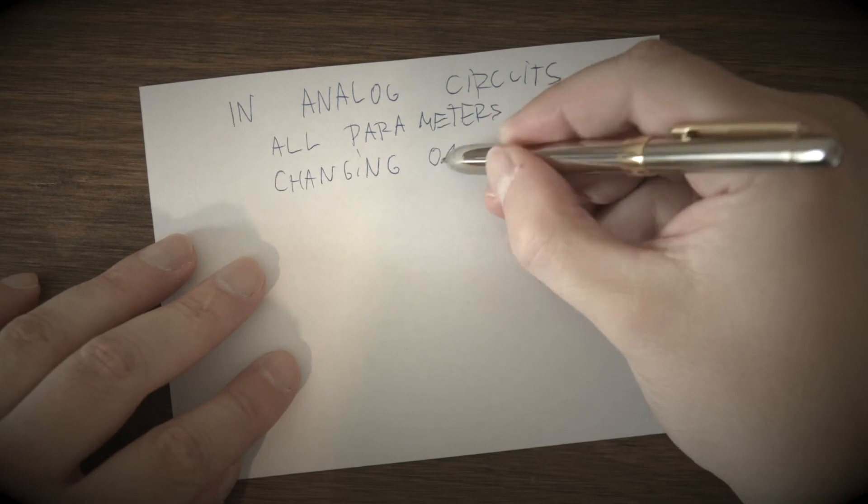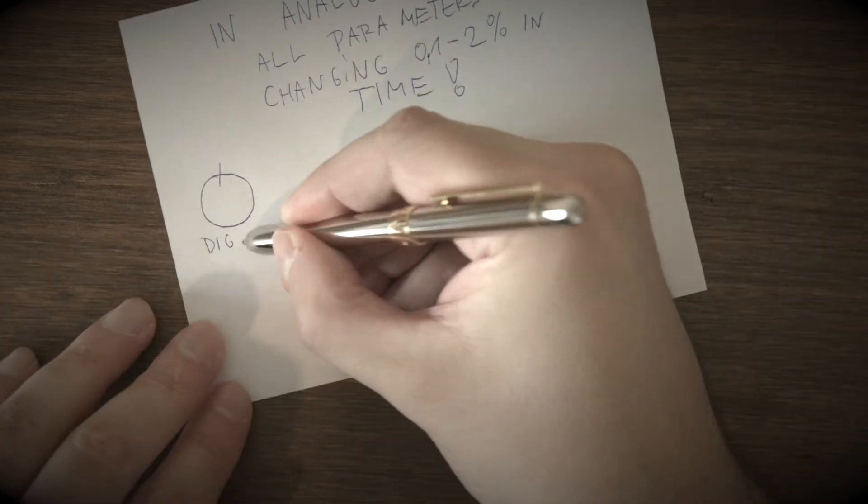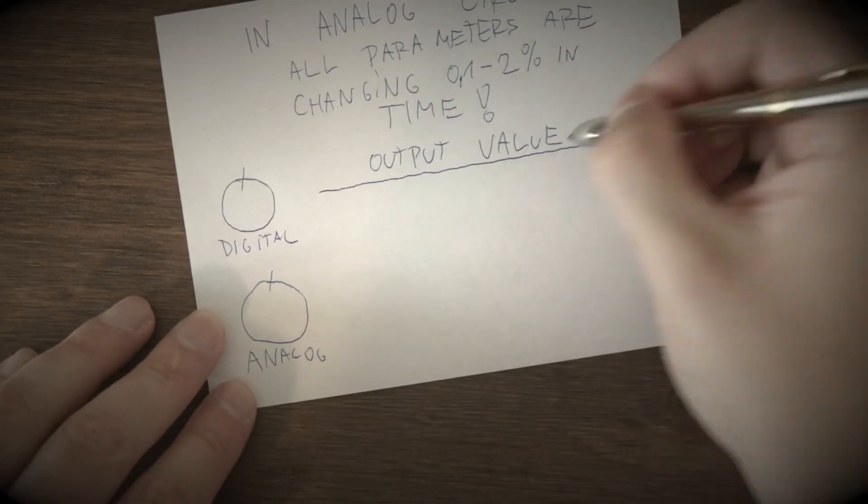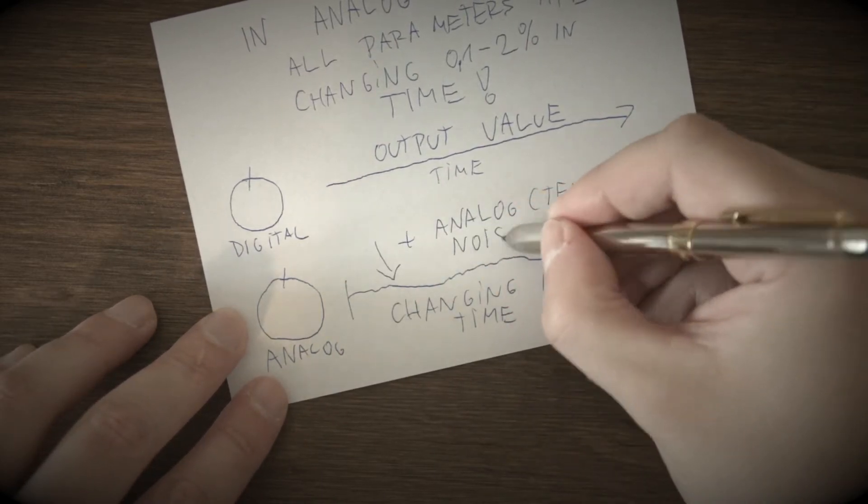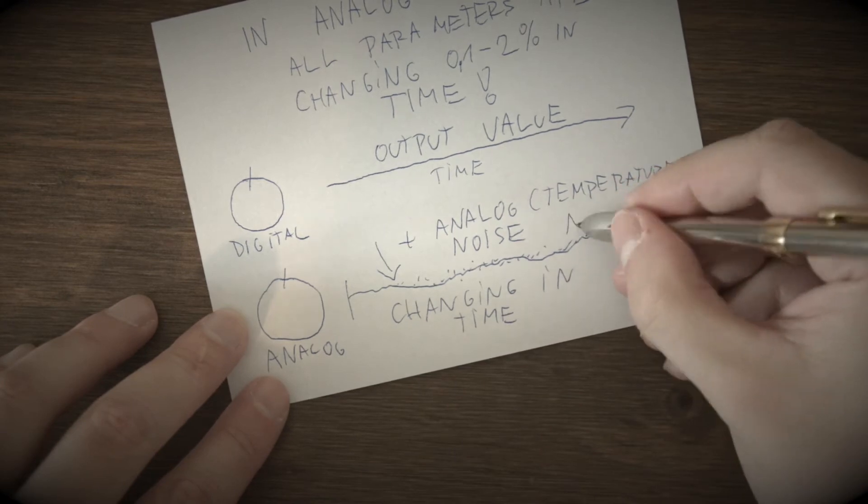In analog devices, all parameters are voltage signal which includes temperature noise and is little bit changing in time from 0 to 1%. While digital parameters are always the same, static and precise.